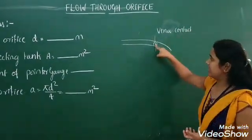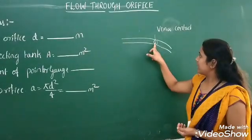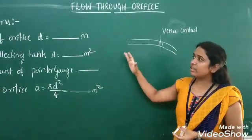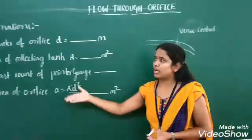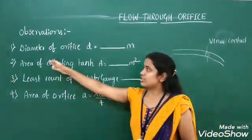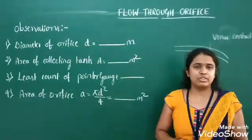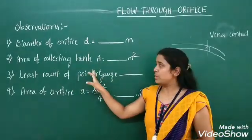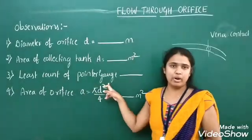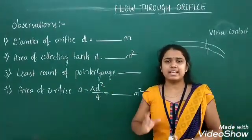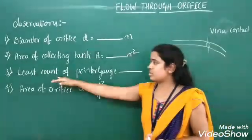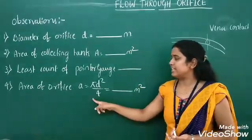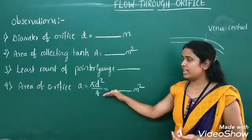The vena contracta is the point we need to find out whenever the experiment is ongoing. In order to do the experiment, we need to note down the observations. We need the diameter of the orifice — whatever diameter is fixed for the tank. We also need the area of the collecting tank, and the least count of the pointer gauge. The pointer gauge is used to take exact x and y distances. Using the diameter, we also need to calculate the area of the orifice.